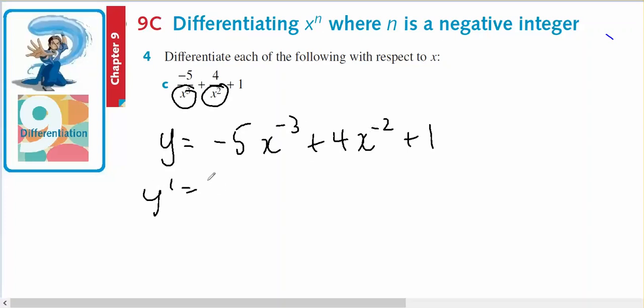So then y dash will be negative 3 times negative 5, positive 15x to the negative 4, minus 8x to the negative 3 plus 0.